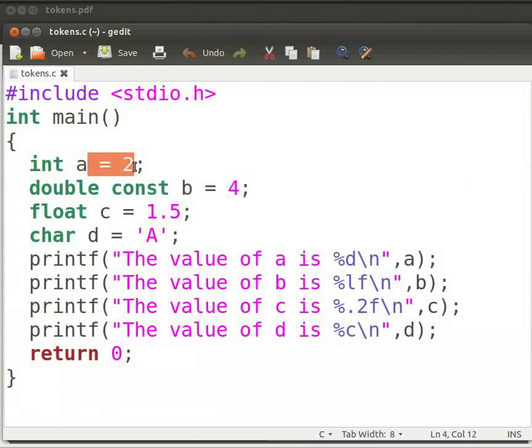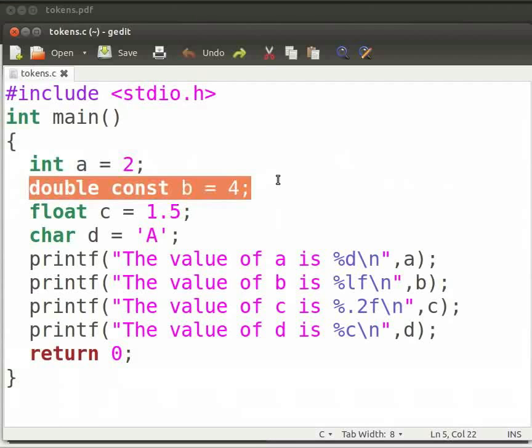If a value is not assigned to a variable, then it is called a declaration of the variable. Here, B is a constant. We have initialized B by assigning a value of 4 to it. The const keyword is used to create read-only variables.